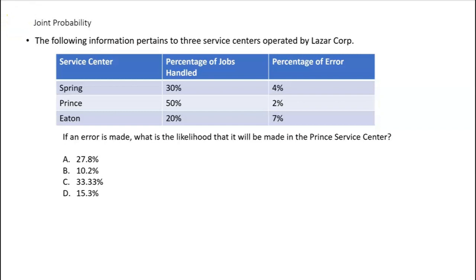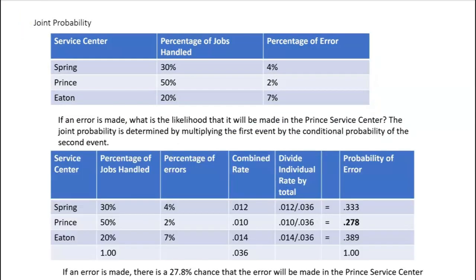These service jobs are handled by three service centers for Lazar Corp. The Spring service center handles 30% of the jobs with a 4% error rate — meaning four times out of a hundred, there's an error. The Prince center handles 50% of the jobs with only a 2% error rate. The Eaton service center handles just 20% of the jobs but has a 7% error rate — Eaton is a little sloppy, which is probably why they only handle 20% of the jobs.